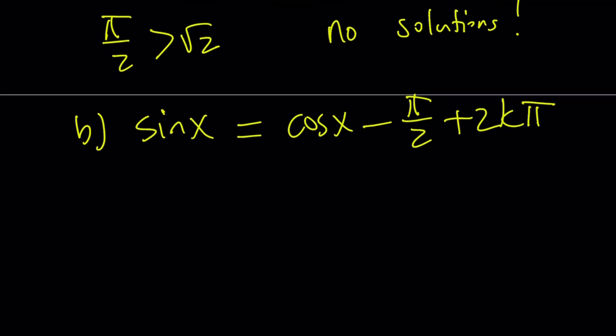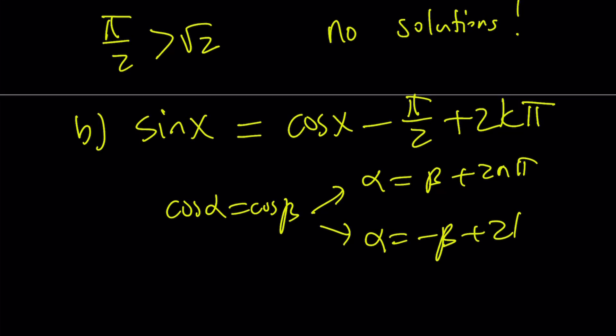So what I did was, basically, if you have cos(α) plus cos(β), this gives you two solutions. Either alpha equals beta plus 2nπ, or alpha is equal to negative beta plus 2kπ. Of course, n and k can be different values.